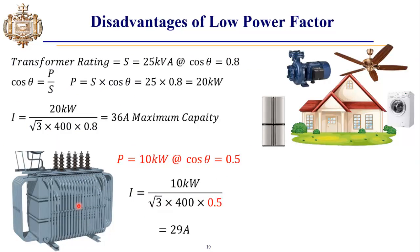This is a distribution transformer which is providing electricity to the residential area. The rating of this transformer is 25 kVA at cos θ equal to 0.8. So we can compute the total active power which this transformer can provide according to this formula, which comes out to be 20 kilowatts. The maximum current that this transformer can provide comes out to be 36 amperes according to this formula.